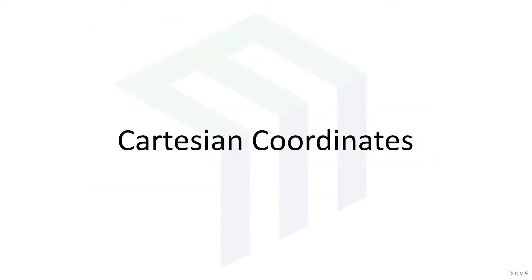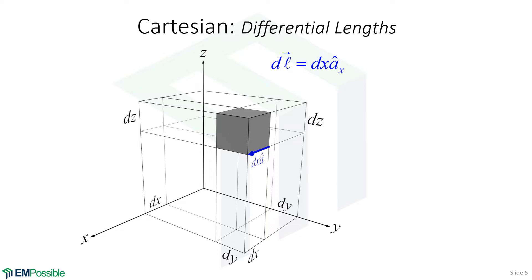Cartesian coordinates. We start by drawing our Cartesian coordinates and putting a little tiny differential volume somewhere in space. From this we will define the three different differential lengths, the three different differential surfaces, and then the differential volume. Here we're showing the first differential length — the length of our differential volume in the x direction. Differential length is a vector quantity with a magnitude and a direction. The magnitude is dx, and the direction is the unit vector in the x direction, right along the edge of our differential volume.